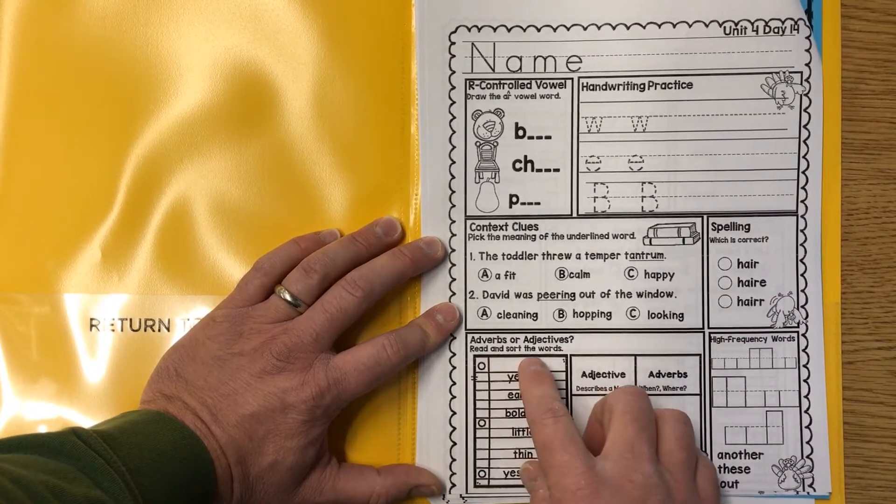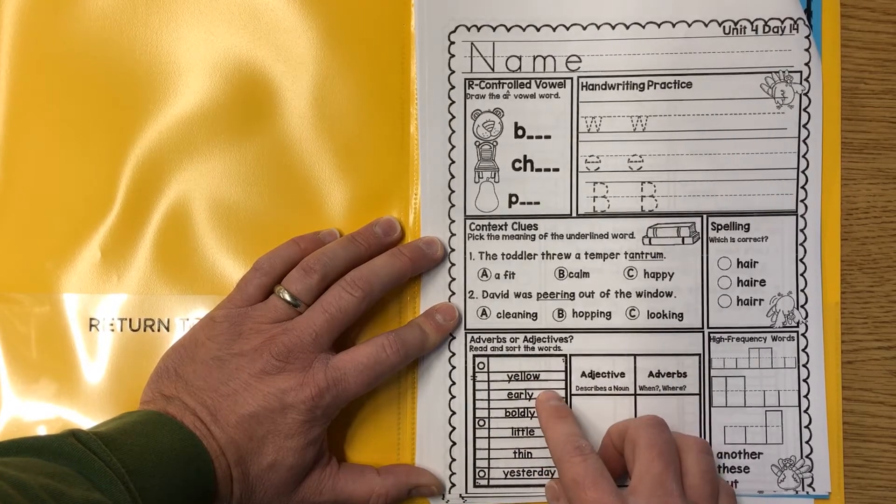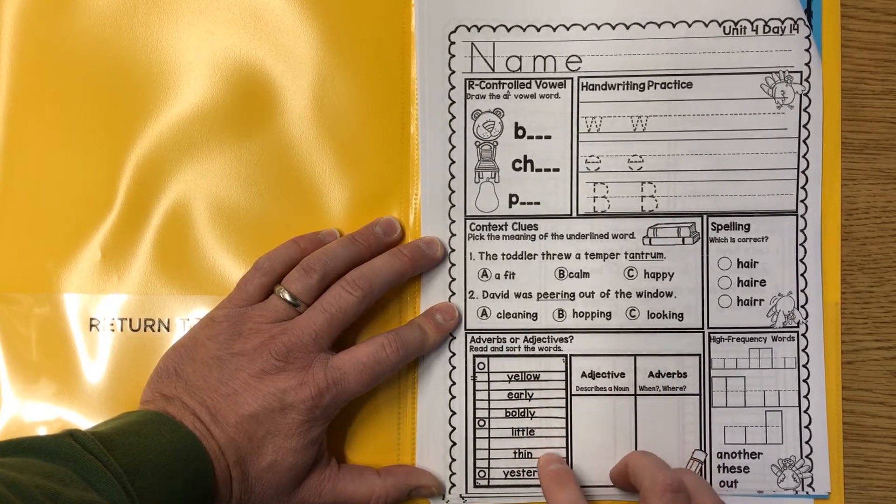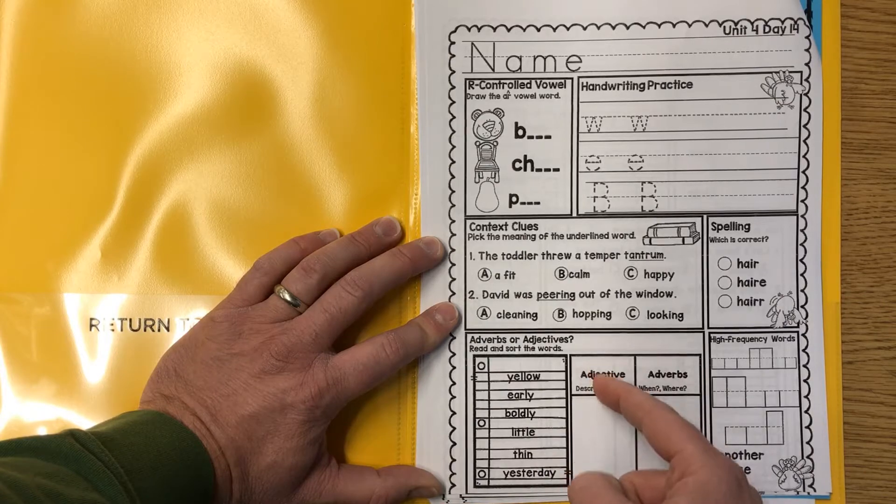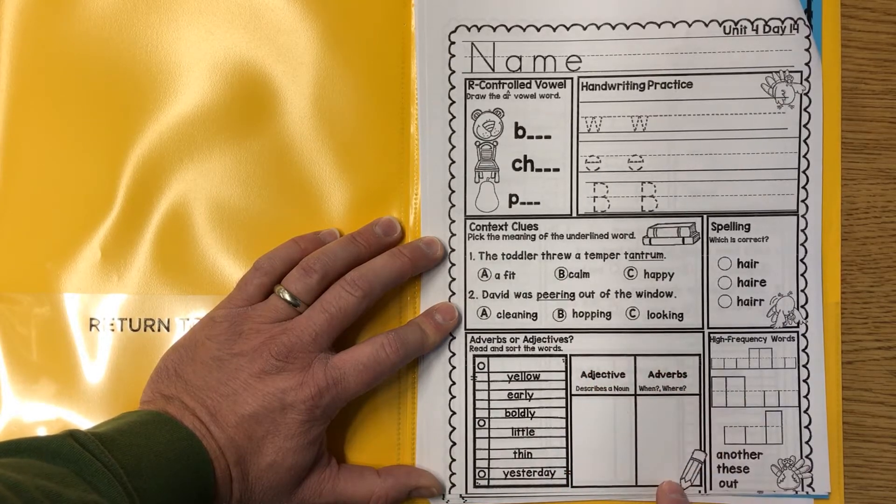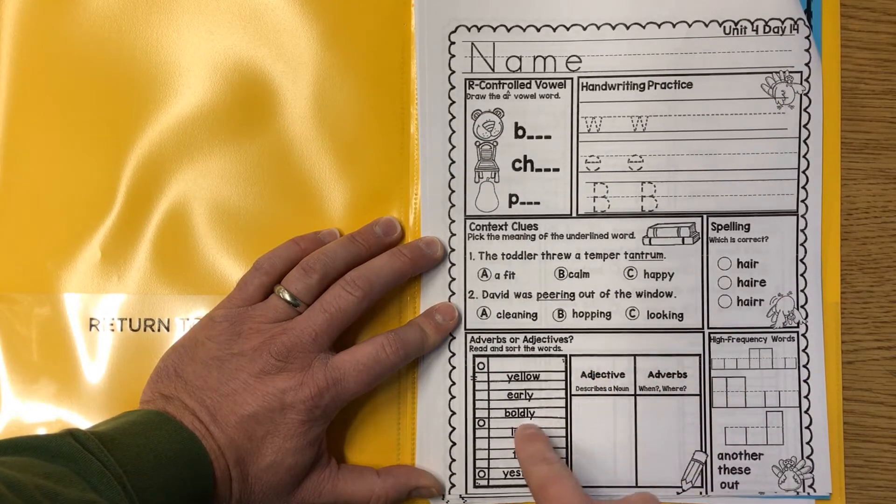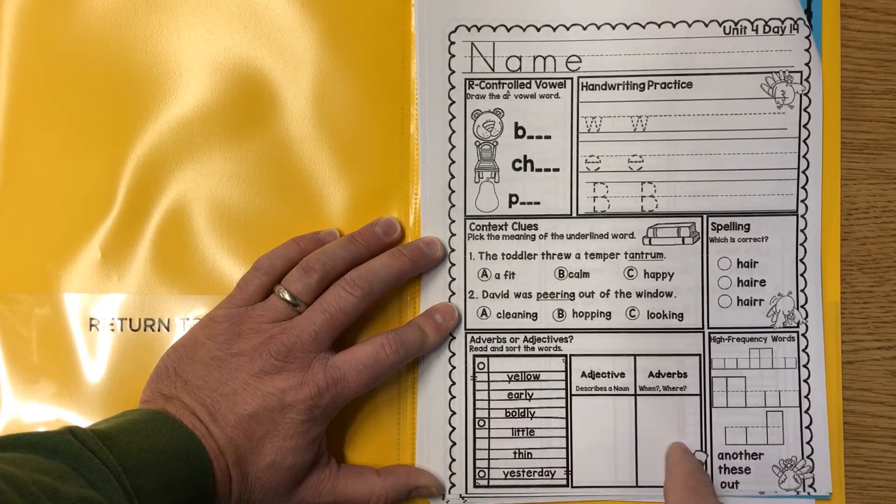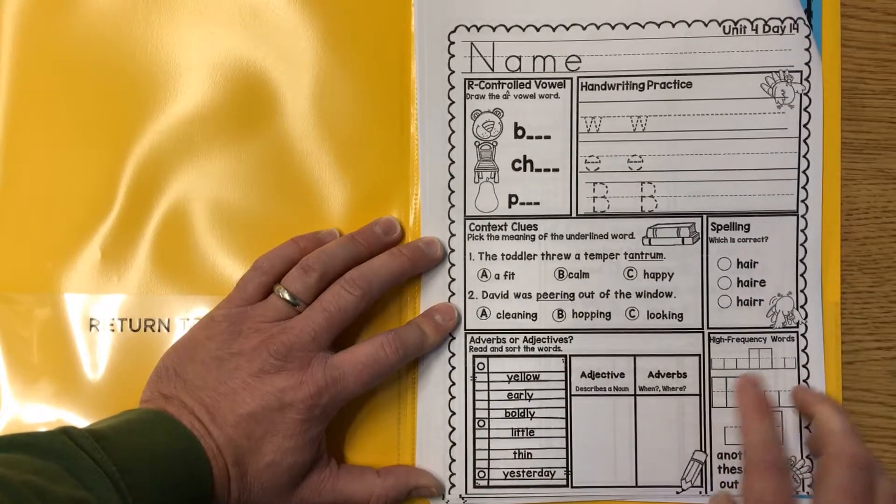Adverbs or adjectives, read and sort the words. You got yellow, early, boldly, little, thin, yesterday. Adjectives go here, adverbs here. Remember, adjectives always describe a noun, typically after it. Okay, adverbs have a LY a lot.